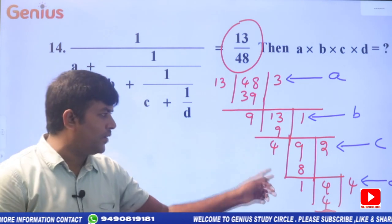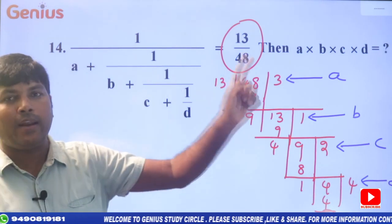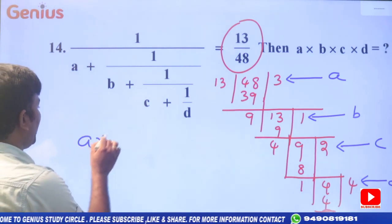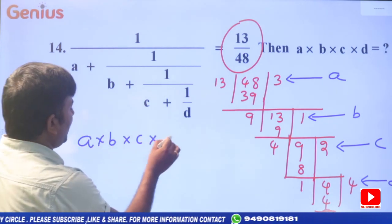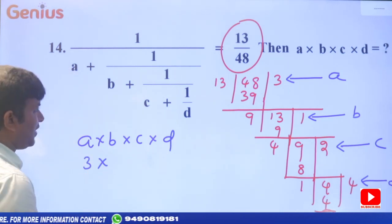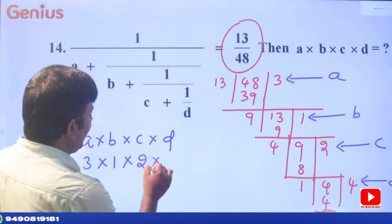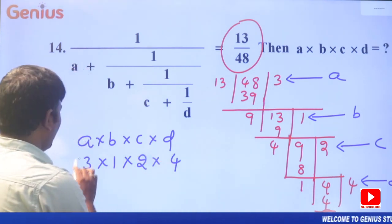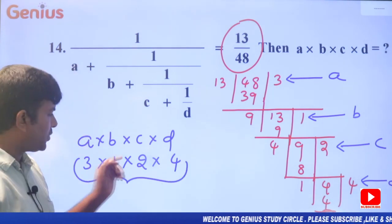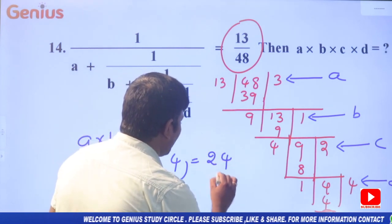From the quotients on the right-hand side: A=3, B=1, C=2, D=4. Now A×B×C×D: 3 ones are 3, 3 twos are 6, 6 fours are 24. So our final answer is 24.